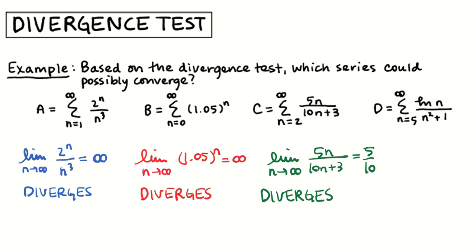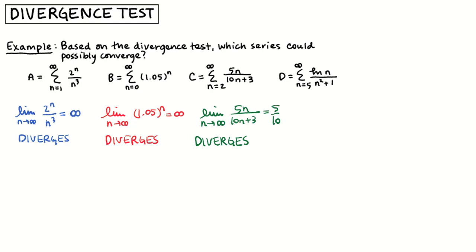For the last example D, I consider the limit as n approaches infinity of ln(n) divided by (n^2 + 1). We know that ln(n) grows slower than any polynomial in n, so n^2 + 1 grows faster, and the faster-growing denominator drives the quotient to zero. Because the limit of the terms is zero, I can say that series D possibly converges.